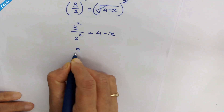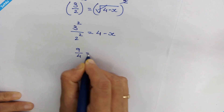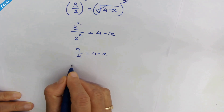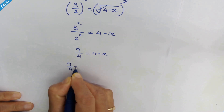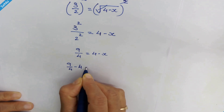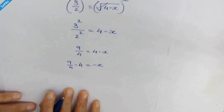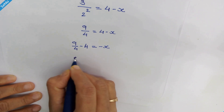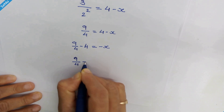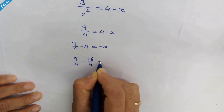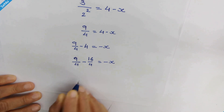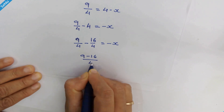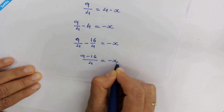3 squared is 9 and 2 squared is 4, so we have 9 upon 4 is equal to 4 minus x. Moving the 4 to the left-hand side and taking the LCM, we get 9 upon 4 minus 16 upon 4 is equal to minus x. So in the next step we have 9 minus 16 upon 4 is equal to minus x.